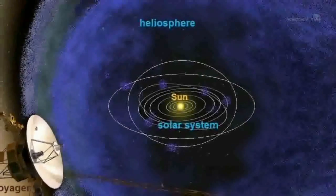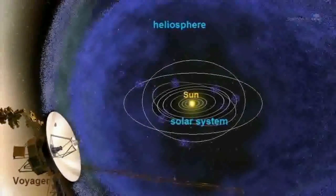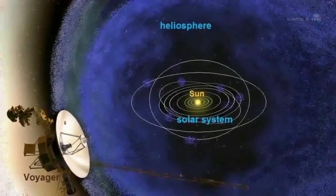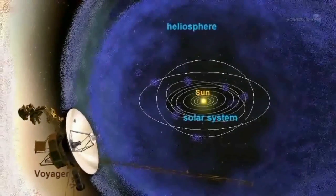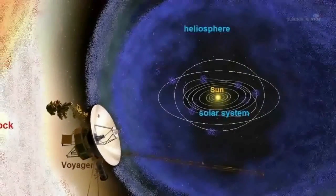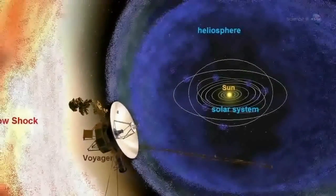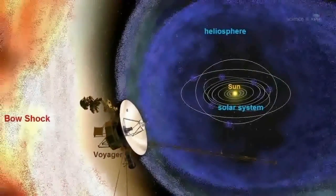A reversal of the Sun's magnetic field is, literally, a big event. The domain of the Sun's magnetic influence, also known as the heliosphere, extends billions of kilometers beyond Pluto. Changes to the field's polarity ripple all the way out to the Voyager probes, on the doorstep of interstellar space.